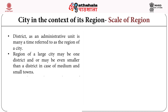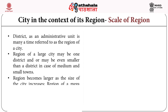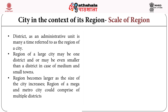The region becomes larger as the size of the city increases. The National Capital Region is about 50,000 square kilometers, vis-à-vis Kolkata which is about 2,000 square kilometers. However, there may be instances where the population is the same but the region of a city varies due to activities, potential, and links.